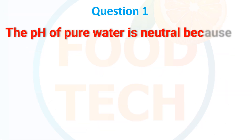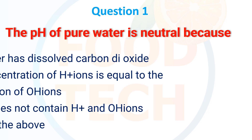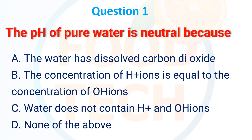Question 1: The pH of pure water is neutral because — a. The water has dissolved carbon dioxide. b. The concentration of H+ ions is equal to the concentration of OH- ions. c. Water does not contain H+ and OH- ions. d. None of the above. The correct answer is b: the concentration of H+ ions is equal to the concentration of OH- ions.